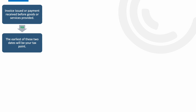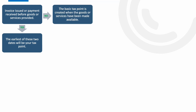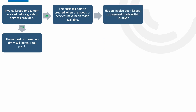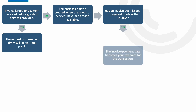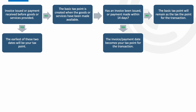Let's now say that the goods or services were made available before payment was made or the invoice was issued. The date that the goods or services were made available would be your tax point. However, if the invoice is issued or payment is made within 14 days of the goods or services being made available, then this would become your tax point. If this were to happen after the 14 days, then the date that the goods or services were made available — i.e. the basic tax point — would remain as is.